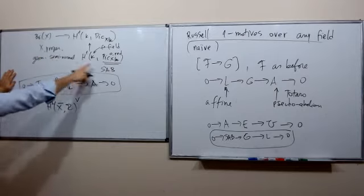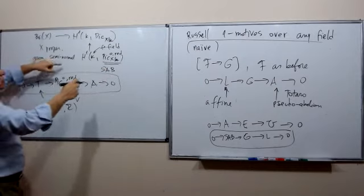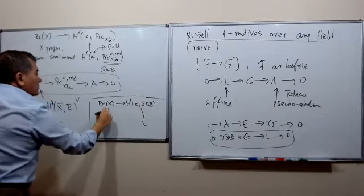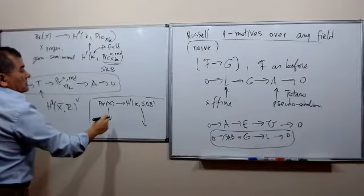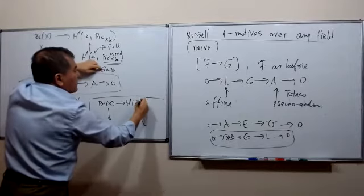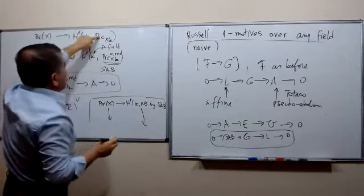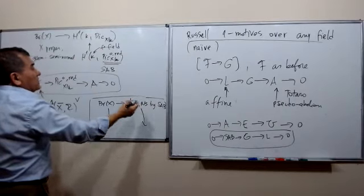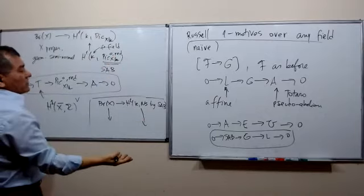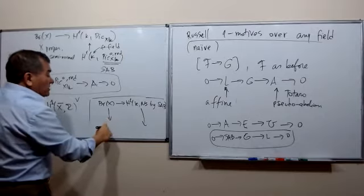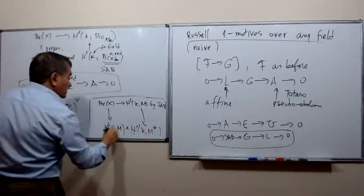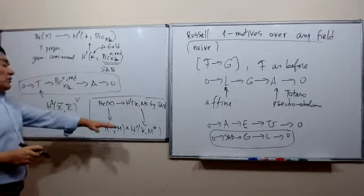This agrees with Brion's theorem: proper and geometrically semi-normal implies the Picard scheme is a semi-abelian variety. So we have Brauer(X) and H¹(k, semi-abelian variety). The dual of the semi-abelian variety is a Deligne 1-motive, so to study this Brauer group via Lichtenbaum duality I need to use Deligne 1-motives and hence the Harari-Szamuely theory.